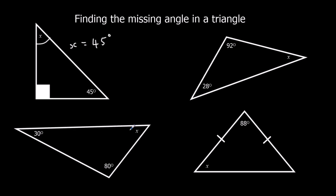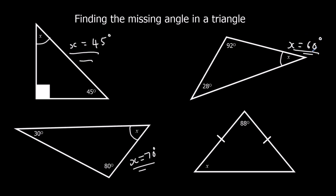For this one down here I've got 80 and 30, that's 110, so I need 70 more — 70 degrees. Here I've got 92 and 28, that's 120, so I need another 60 degrees. Here I've got 88, which means I've got 92 left. These two base angles add up to 92, so they've got to be 46 each. So x is 46 degrees.